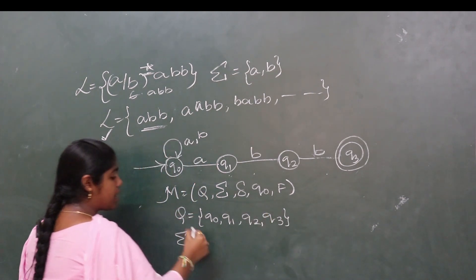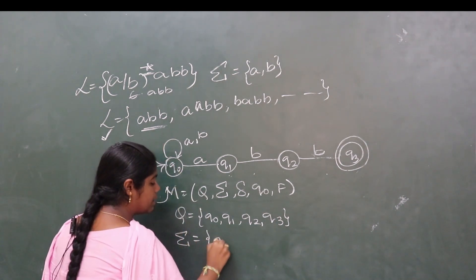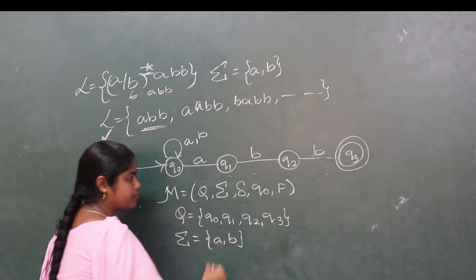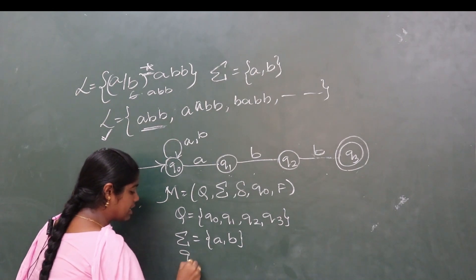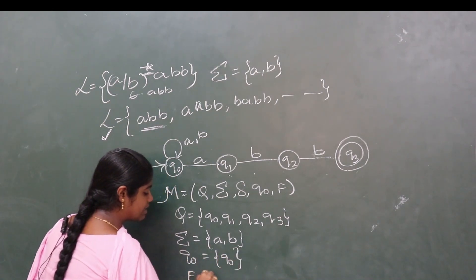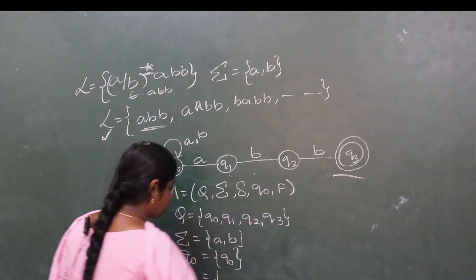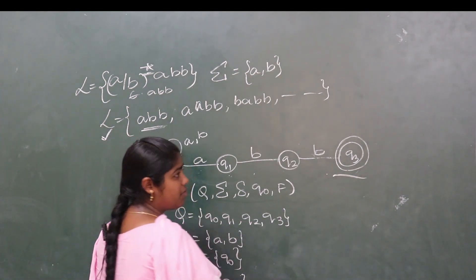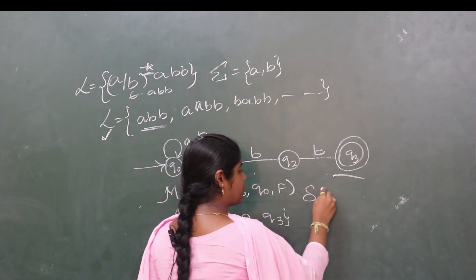Sigma is the input alphabet set: {a, b}. The starting state is Q0, and the final state is Q3. Now we need to find the transition function.